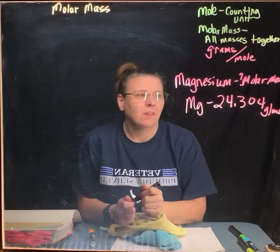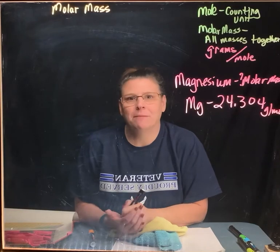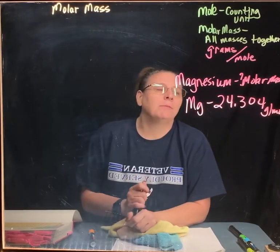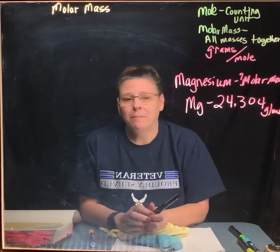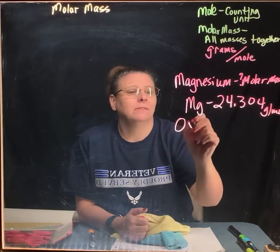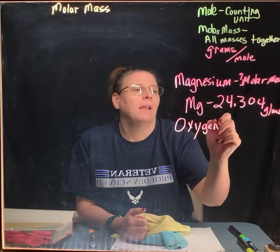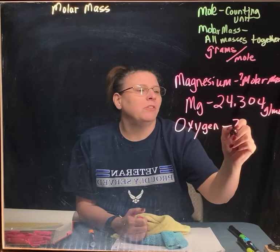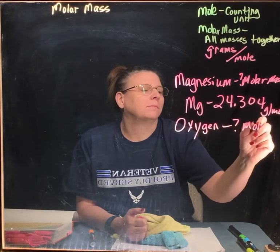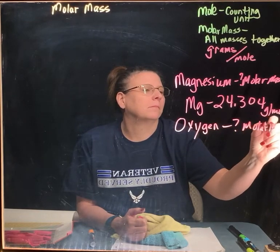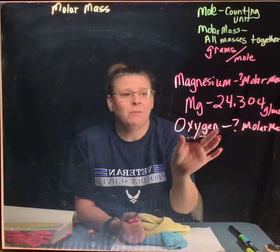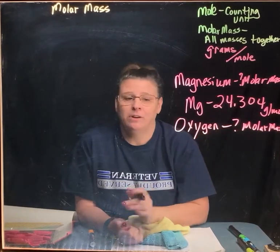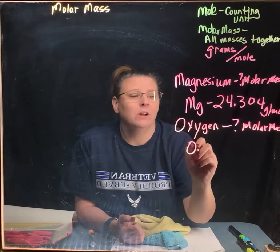Grams over moles. So it's grams per mole, just like miles per hour. Grams per mole. What if I had something like oxygen and I wanted to know the molar mass? Then what I'd have to do, how would I write oxygen if I was translating it? It would not just be O. It would be O2.